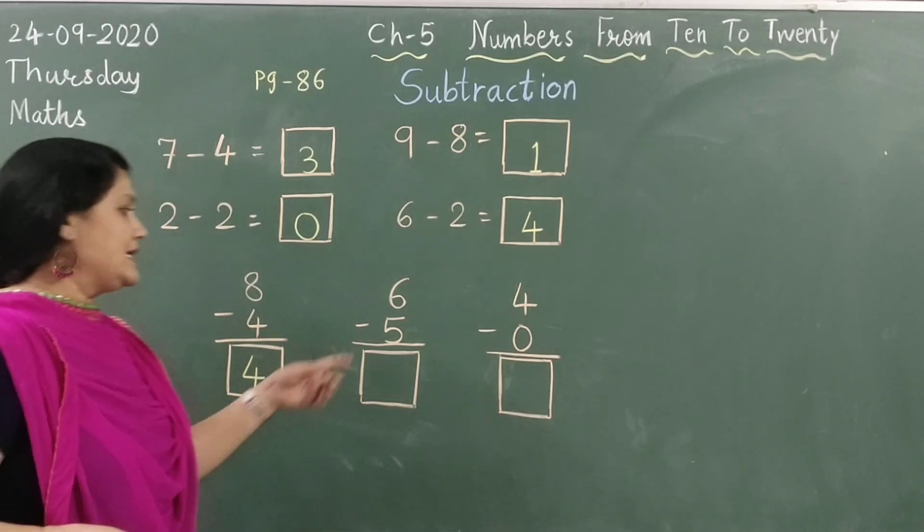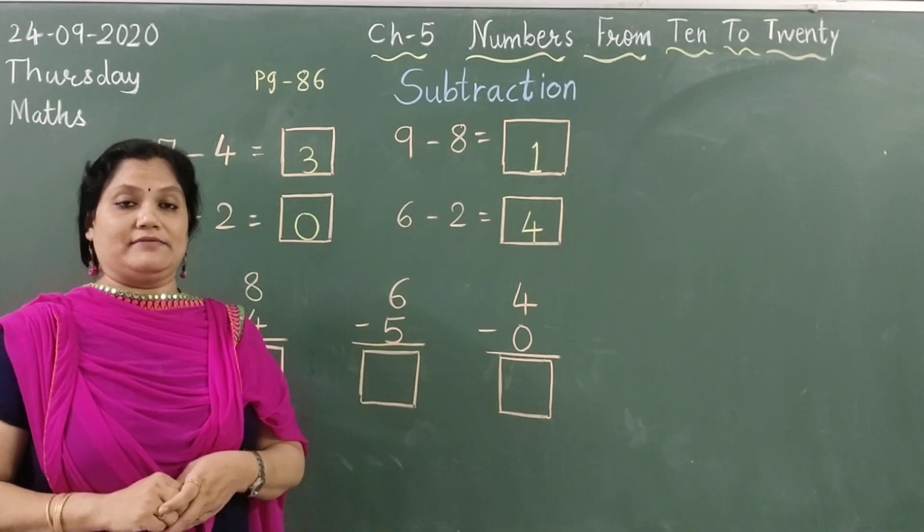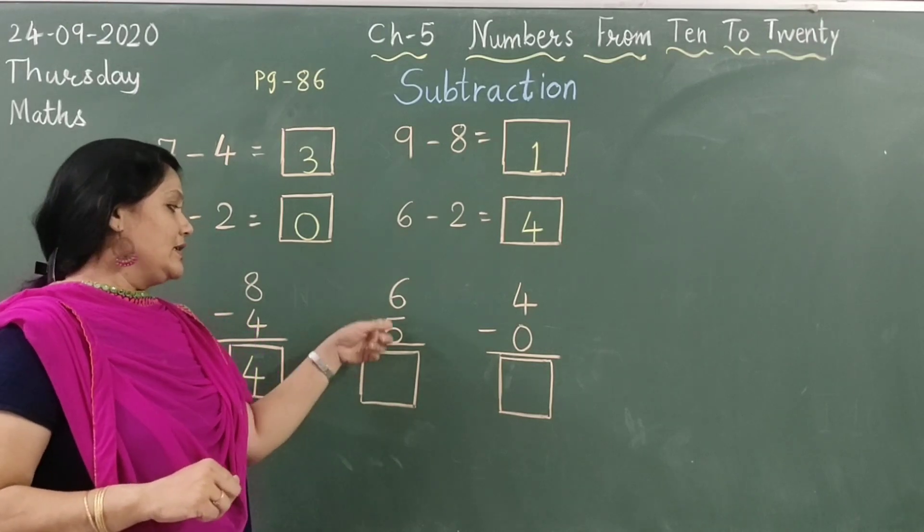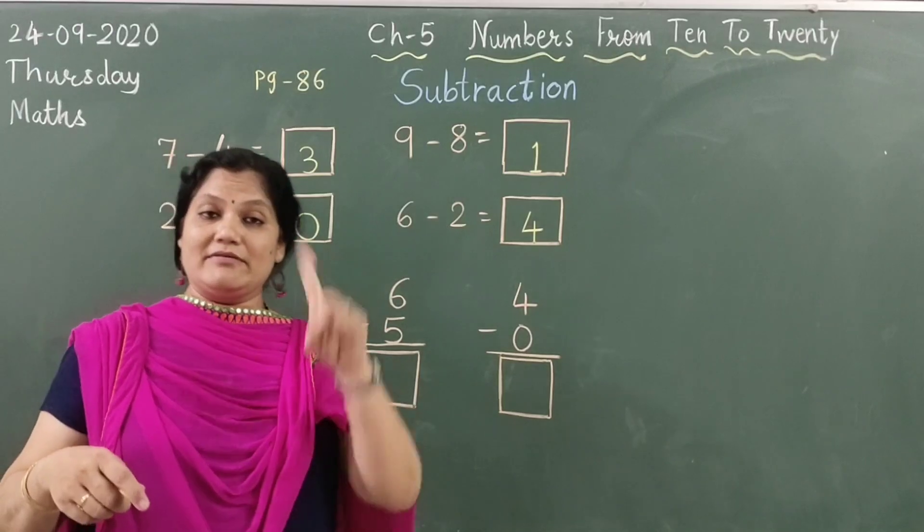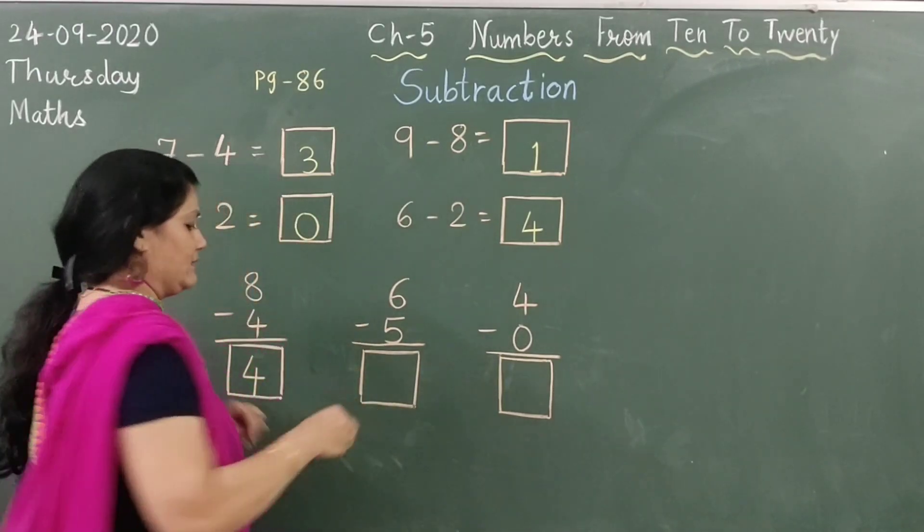Now next is 6 minus 5. Children, after 5 till 6 comes. What comes after 5? 6. So how many? Only 1.